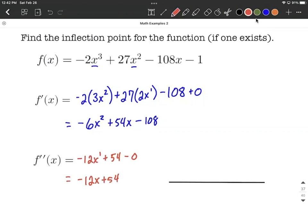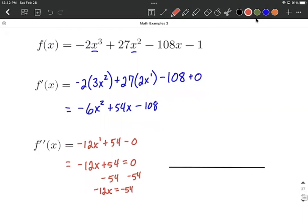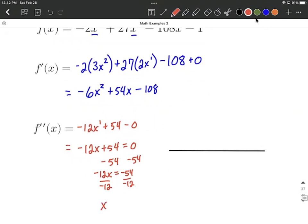And to find inflection points, we want to know when does that second derivative equal zero. So I'm going to go ahead and set it equal to zero, and do a little bit of solving down. So we'll subtract the 54 from both sides. Negative 12x equals negative 54. And then to finish this up, we'll divide both sides by negative 12. So with a little bit of reducing down here, we get x is going to be nine halves, or that's the same thing as 4.5.